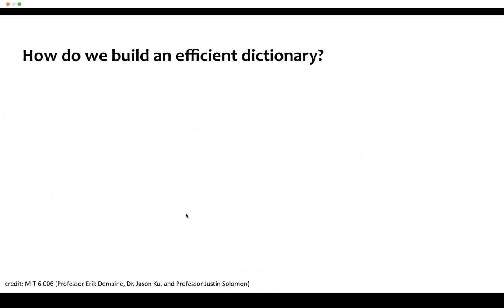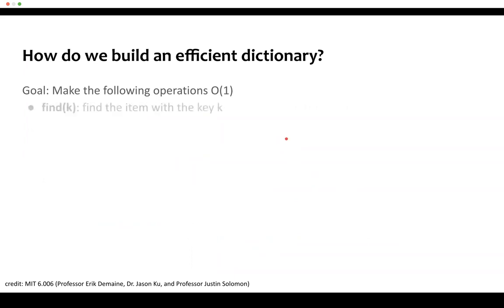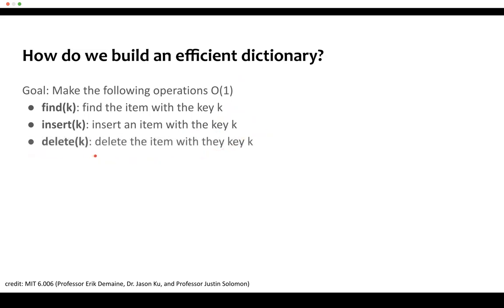So how do we build an efficient dictionary? The goal is to make the following operations O(1): find the item with key K in a dictionary, insert an item with key K, and delete an item with key K — all in O(1) time complexity. In the last class we saw that find takes longer than O(1), so how can we make these operations O(1)?